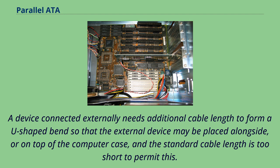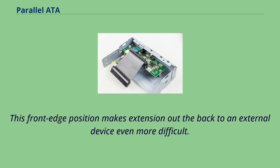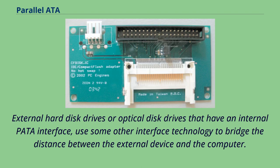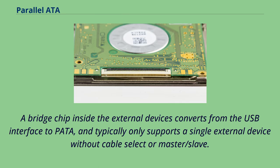A device connected externally needs additional cable length to form a U-shaped bend so that the external device may be placed alongside or on top of the computer case, and the standard cable length is too short to permit this. For ease of reach from motherboard to device, the connectors tend to be positioned towards the front edge of motherboards, for connection to devices protruding from the front of the computer case, making extension out the back to an external device even more difficult. Ribbon cables are poorly shielded, and the standard relies upon the cabling to be installed inside a shielded computer case to meet RF emissions limits. External hard disk drives or optical disk drives that have an internal PATA interface use some other interface technology to bridge the distance. USB is the most common external interface, followed by FireWire. A bridge chip inside the external device converts from the USB interface to PATA and typically only supports a single external device without cable select or master/slave.